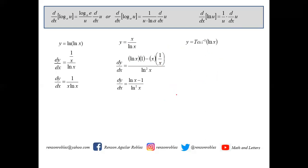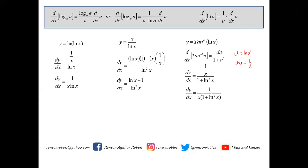Find dy/dx if y equals arctan(ln x). The derivative of arctan u is du over (1 + u²). Here u equals ln x, so du equals 1/x. Therefore dy/dx equals (1/x) all over (1 + (ln x)²), which simplifies to 1 over x(1 + ln² x).